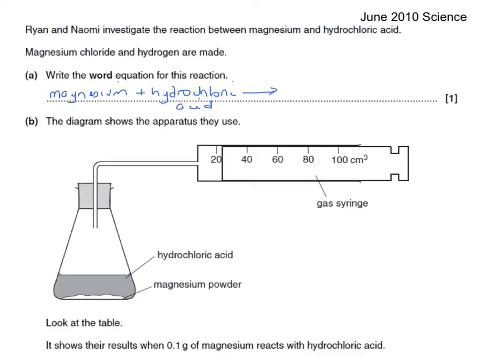And an arrow rather than an equals, although they will accept an equals, but an arrow is better. And then the products are magnesium chloride. Again, I'll write the chloride underneath so I can fit it in. And also then a plus to show the other product is hydrogen.